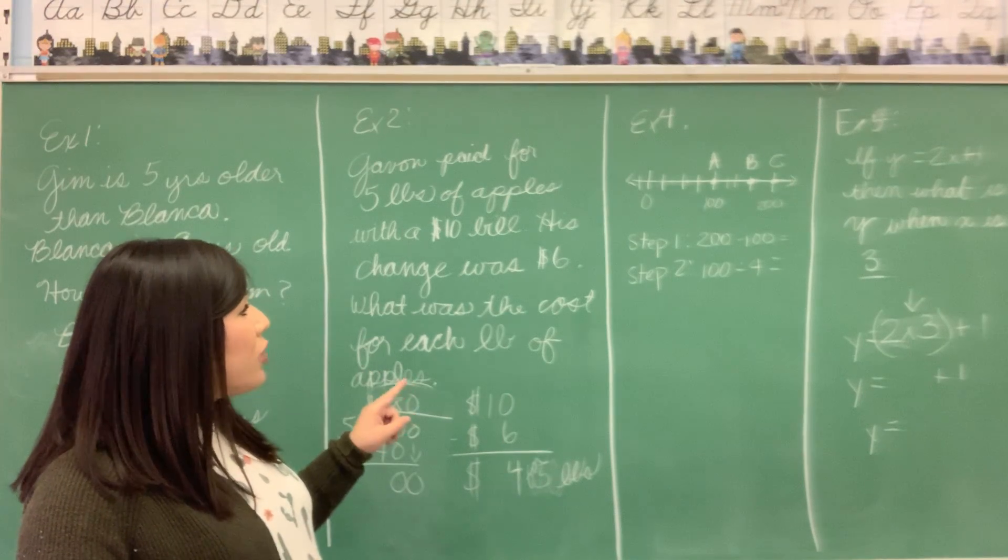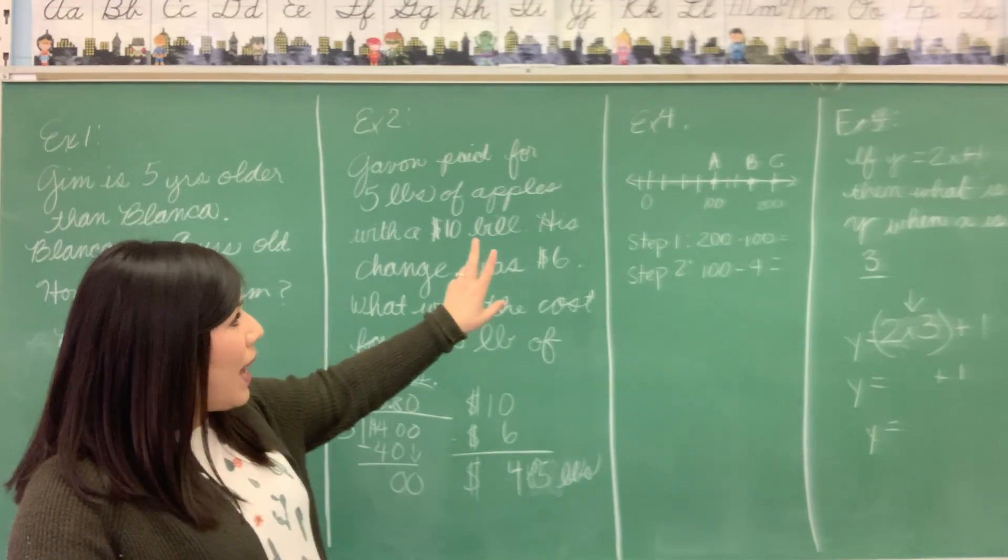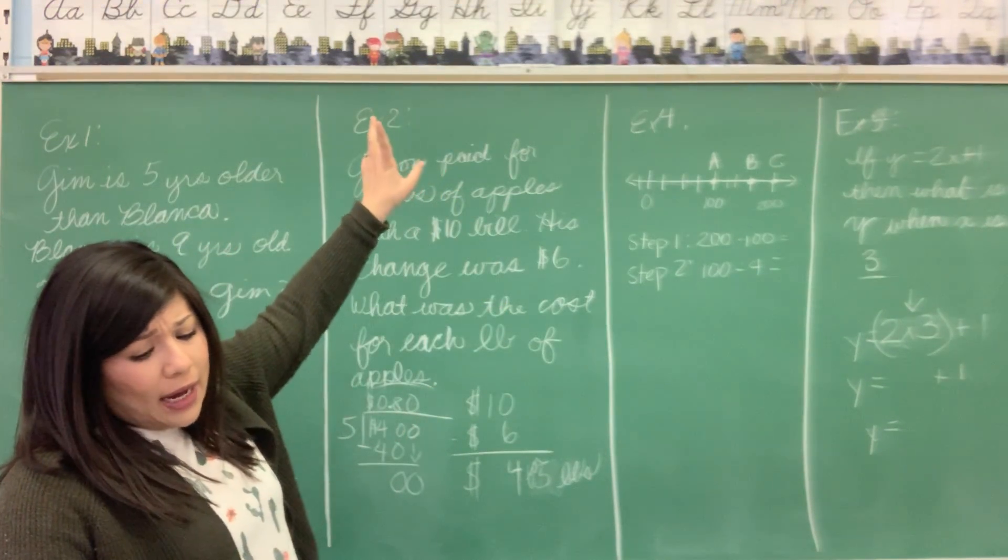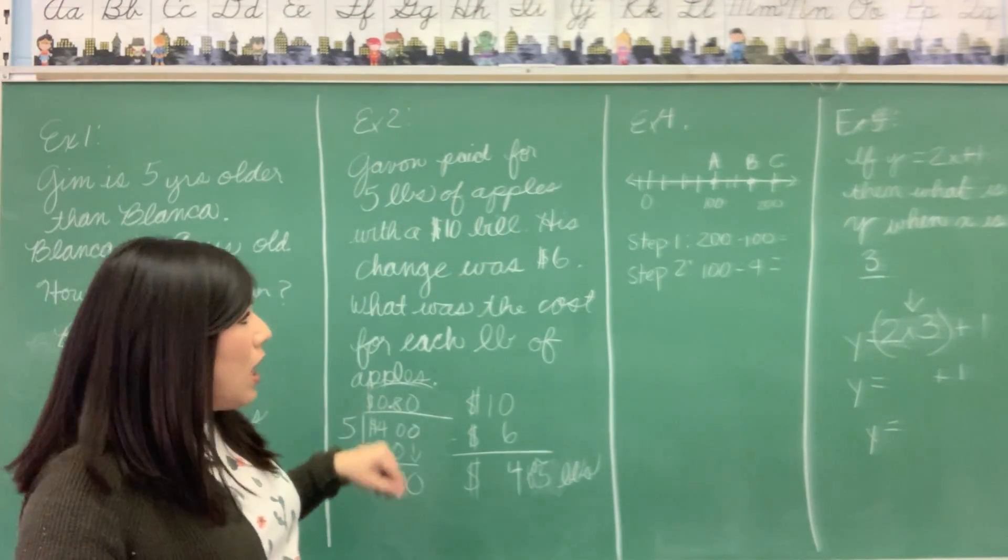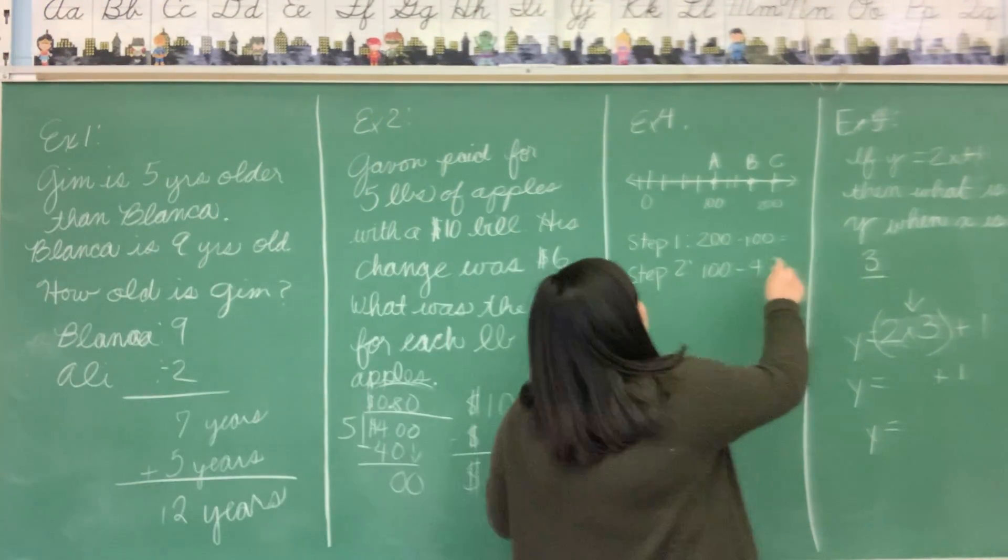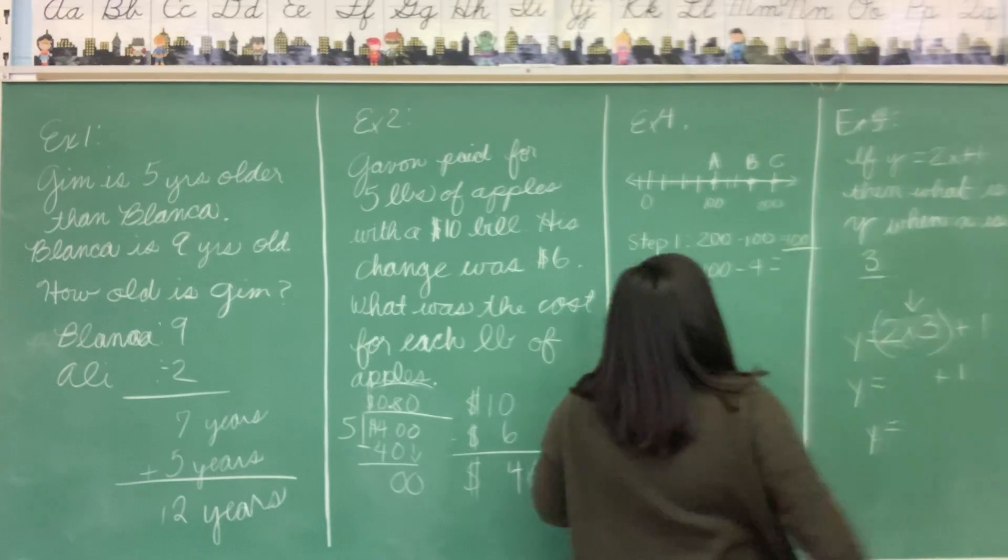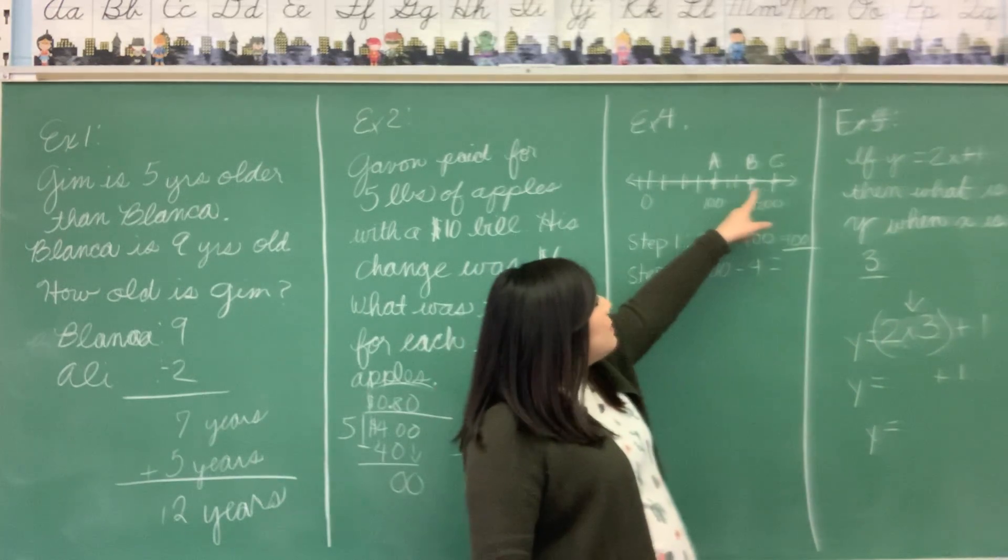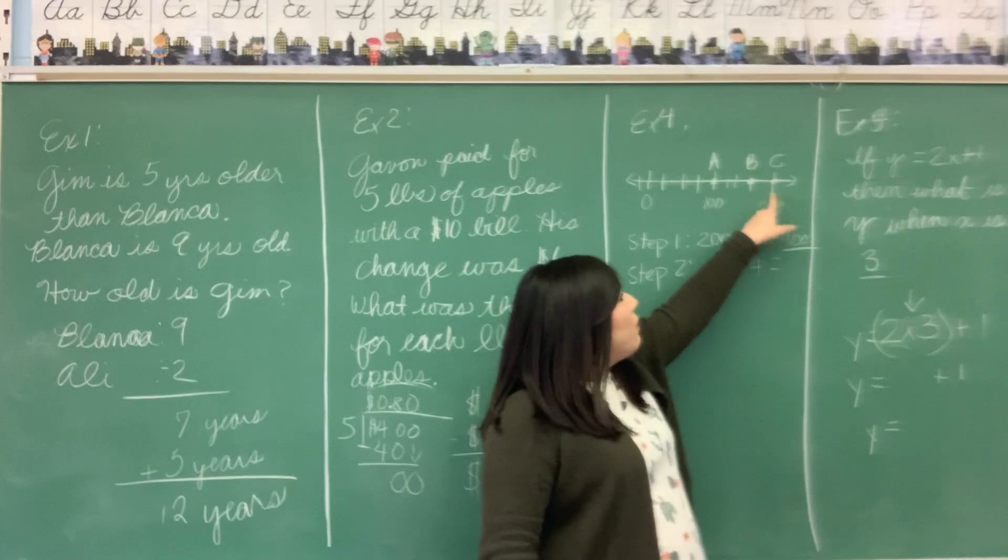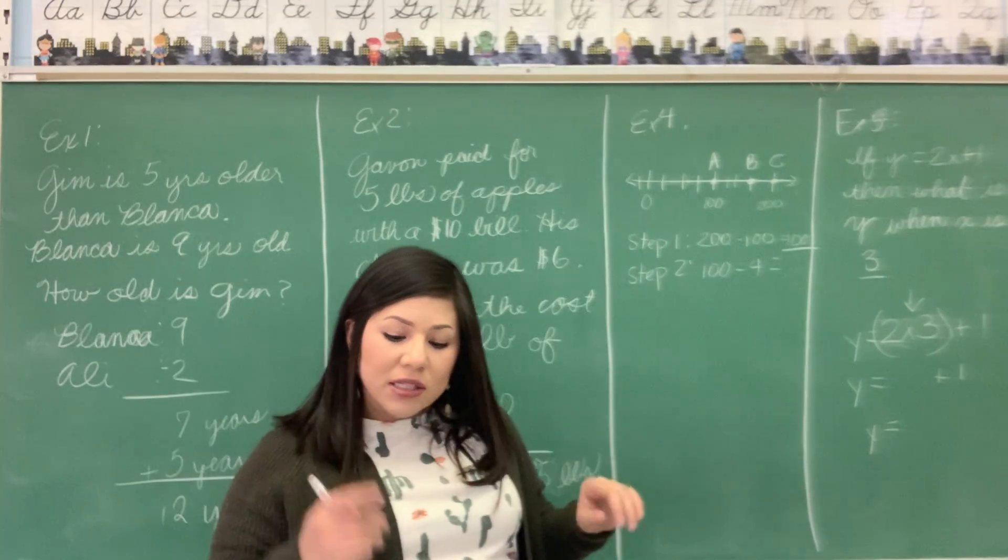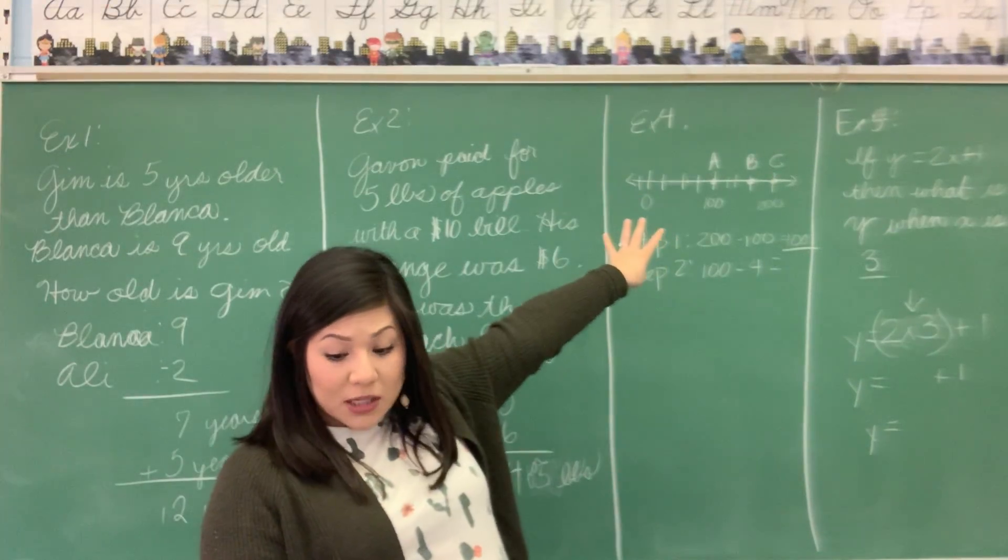So they're asking you here, Point B represents which number on this number line. We're going to solve what point B is here. Between the two points, A and C, it's 200 minus 100. We're going to solve the difference there. That is 100.